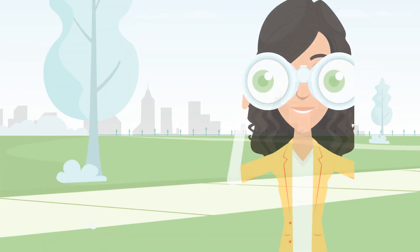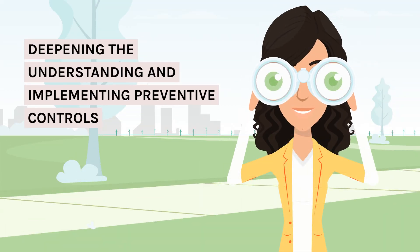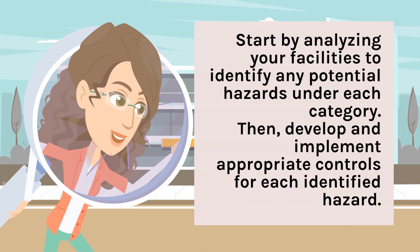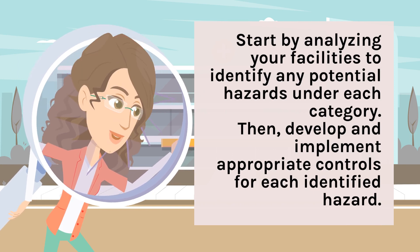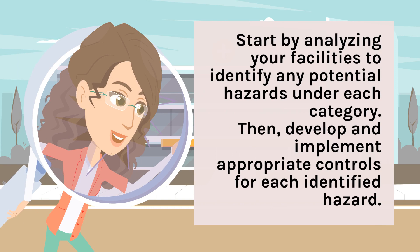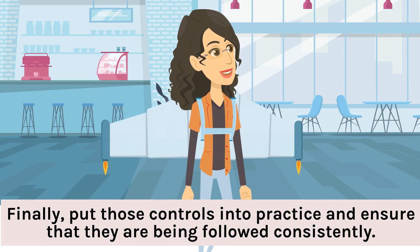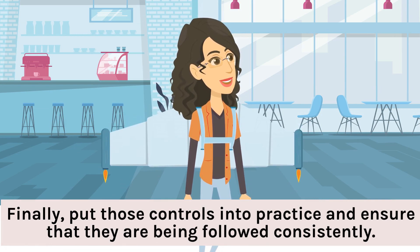Now that we have discussed the four types of preventive controls, the next step is to implement them into your Preventive Control Plan. Start by analyzing your facilities to identify any potential hazards under each category. Then develop and implement appropriate controls for each identified hazard. Finally, put those controls into practice and ensure that they are being followed consistently.